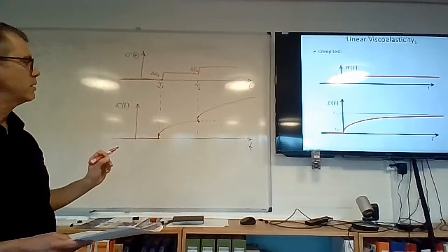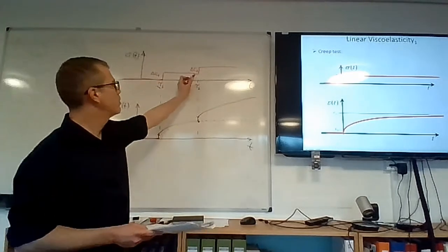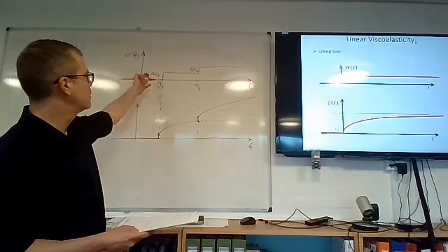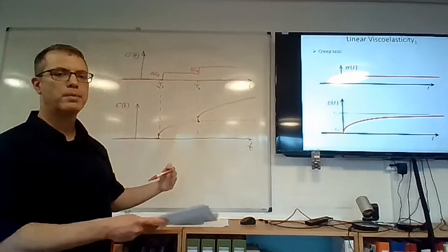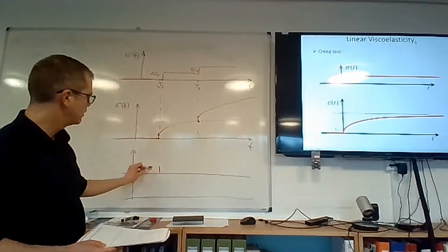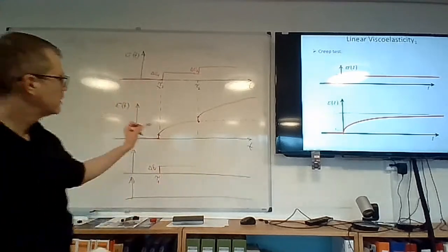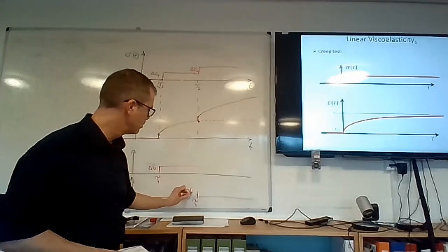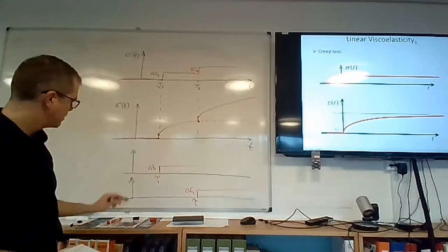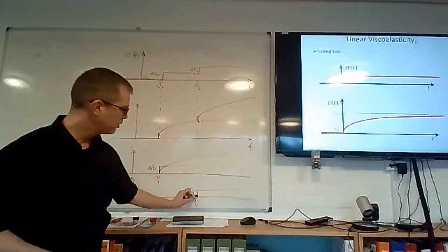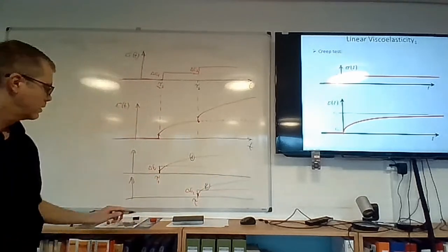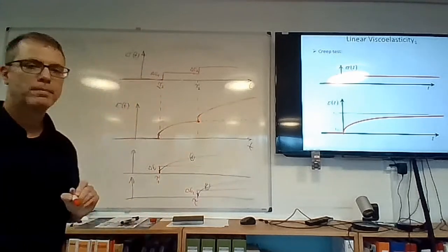What superposition is telling us is that this stress history — delta-sigma-1 and then delta-sigma-2 applied at a later stage — we can split into two problems: we solve the strain response to the first where only delta-sigma-1 is applied, and then we solve for delta-sigma-2, and then we add up the effects. Imagine that the stress history was delta-sigma-1 applied at tau-1 until infinity, and then delta-sigma-2 applied from tau-2 until infinity.